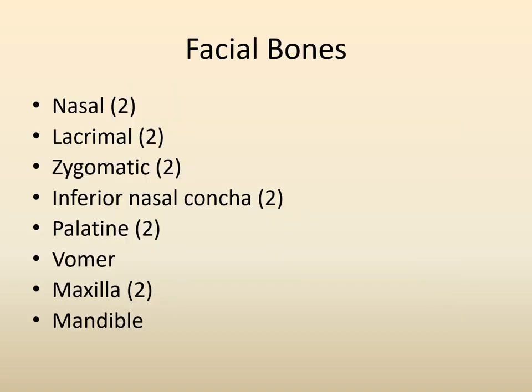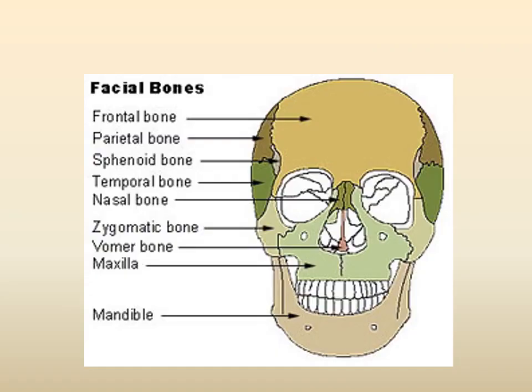For the facial bones, you'll notice that a lot of these come in pairs. You have the nasal, the lacrimal, the zygomatic, the inferior nasal concha, the palatine bone, the maxilla, and the mandible. This diagram shows the location of all of those various bones, helping to form the facial features as well as protecting the eyes.